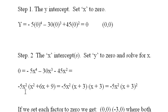I factor out the negative 5x squared and I have a quadratic here, and this also factors into x plus 3 times x plus 3. So I end up with negative 5x squared times x plus 3 squared.